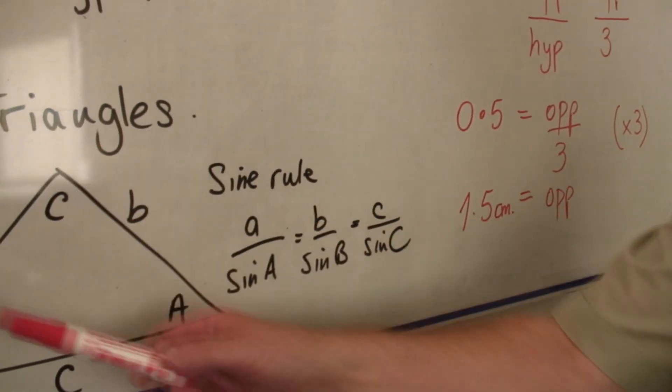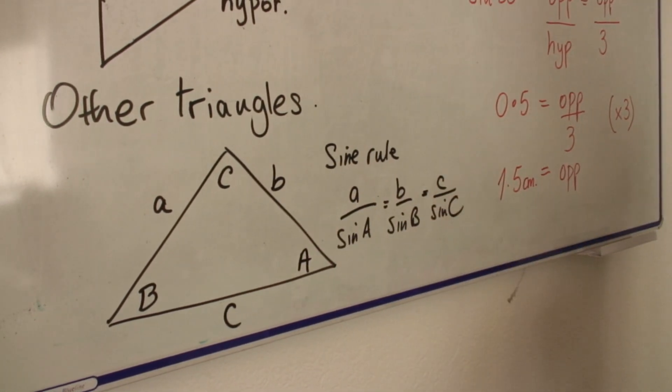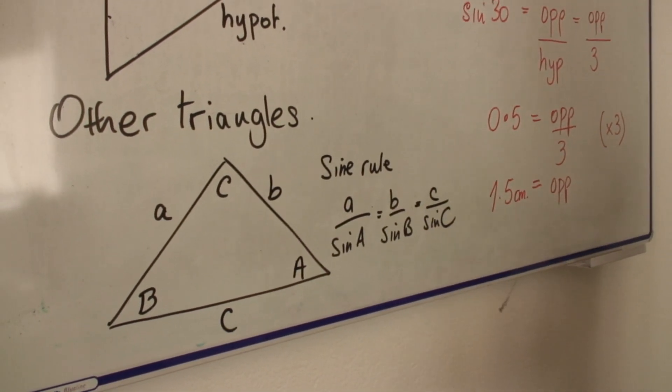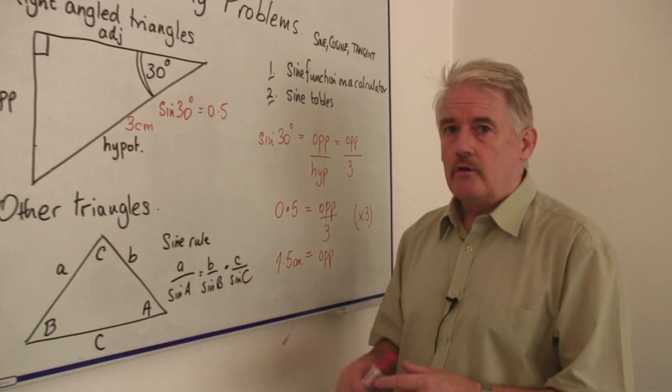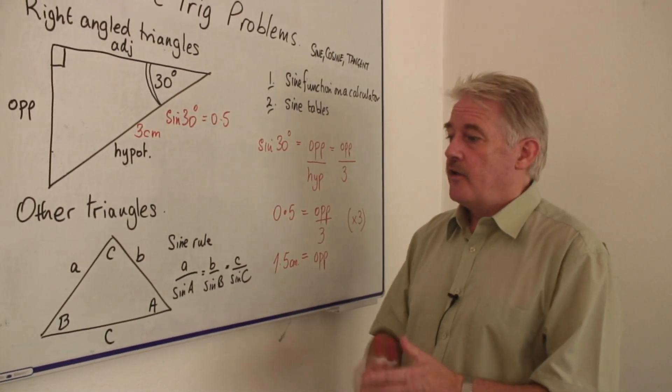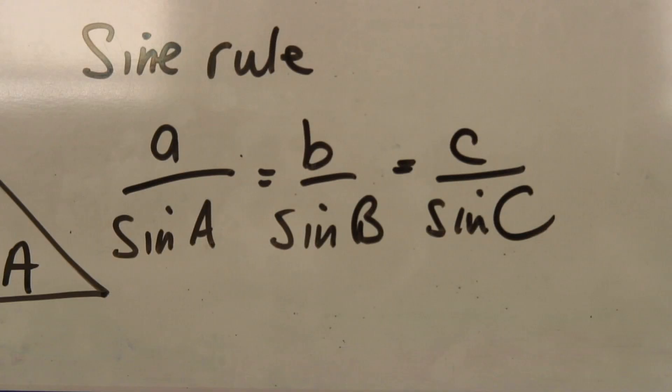So what it enables us to do is within this particular system with any triangle, we can work out the length of a side or the angle, providing we have the opposite sides or the angles associated with those sides.